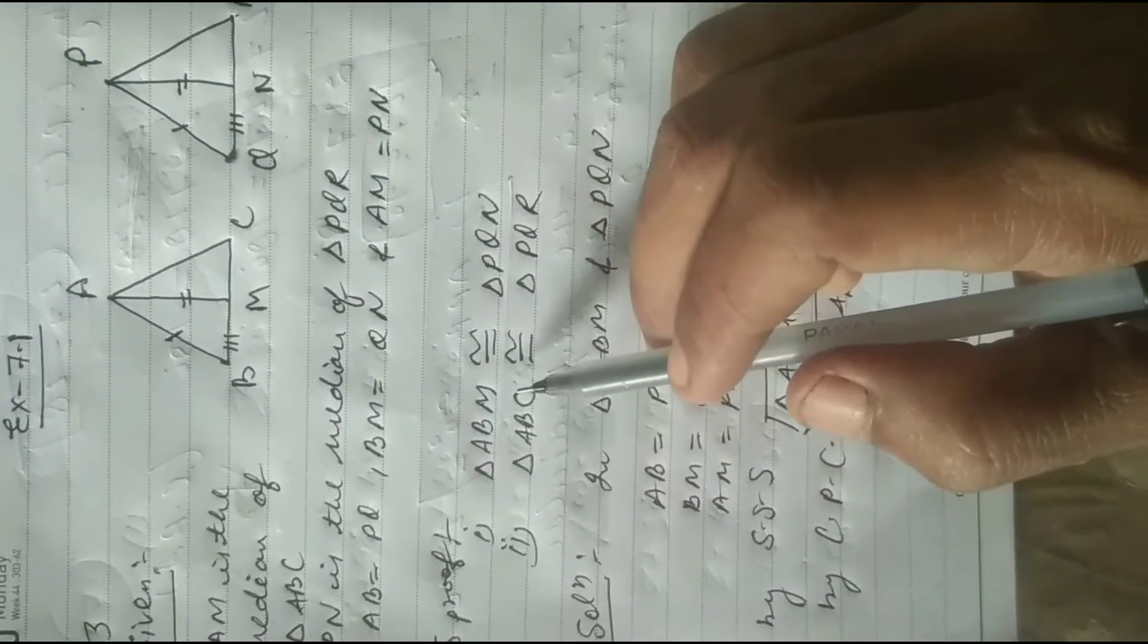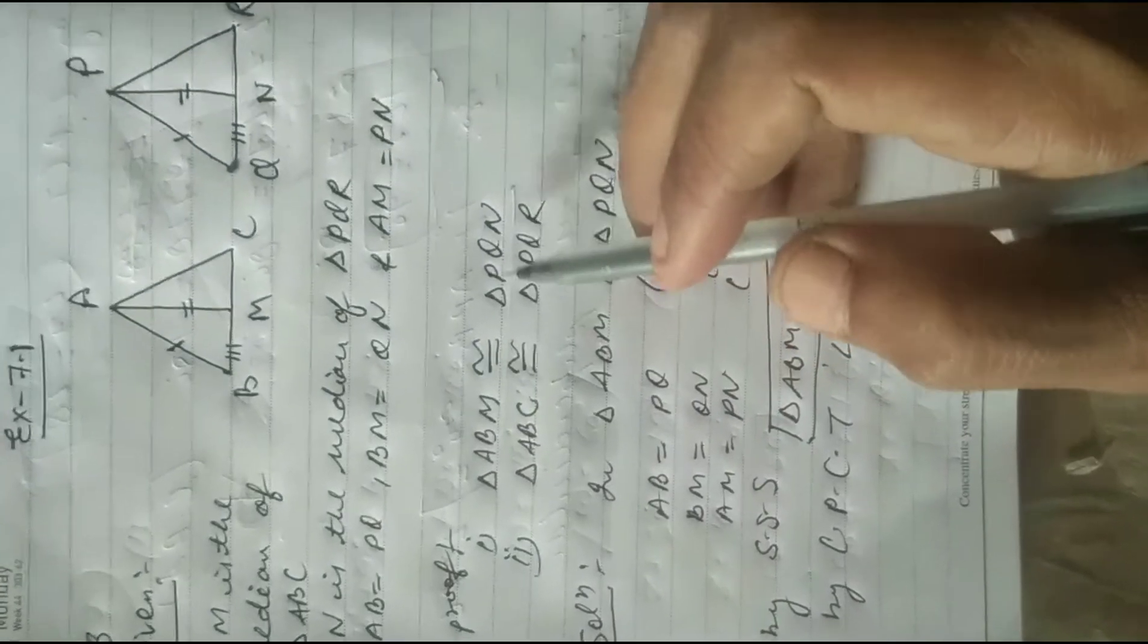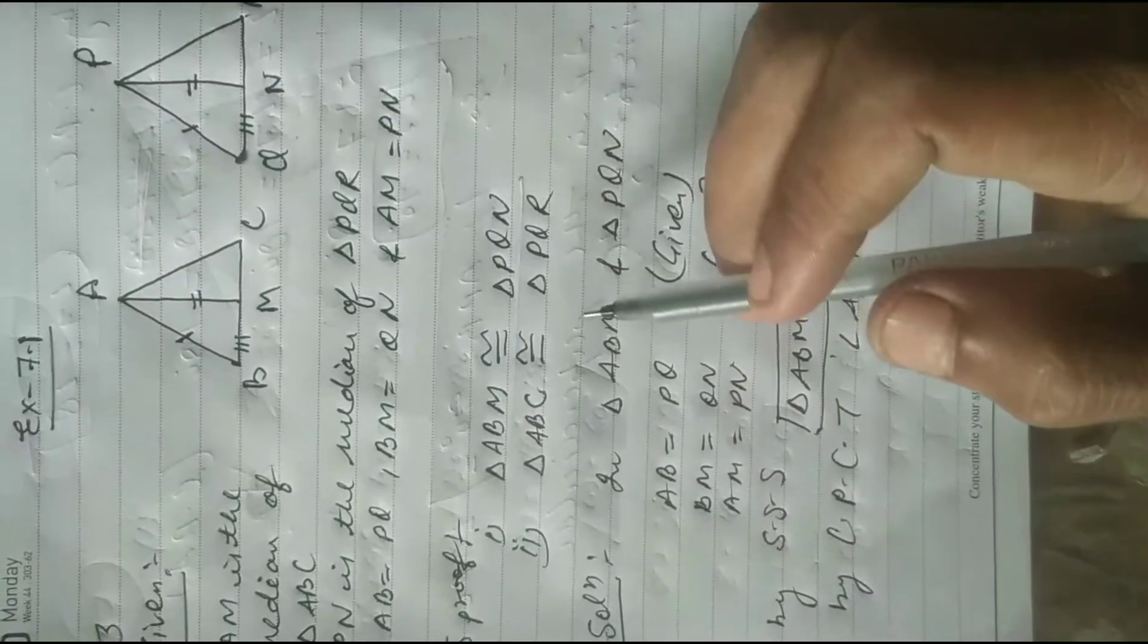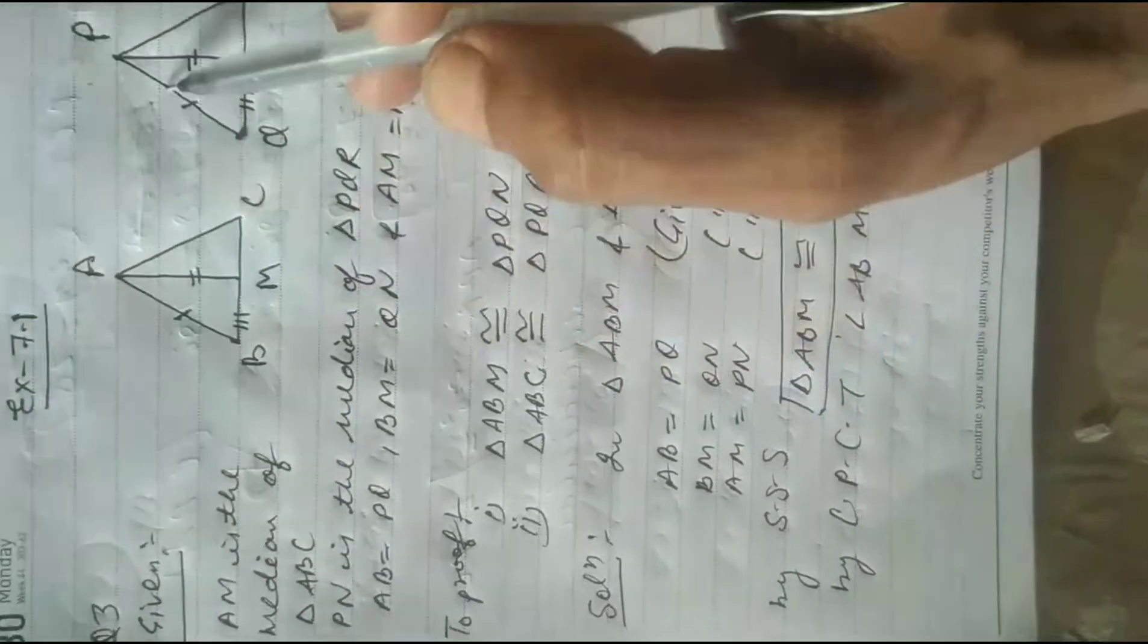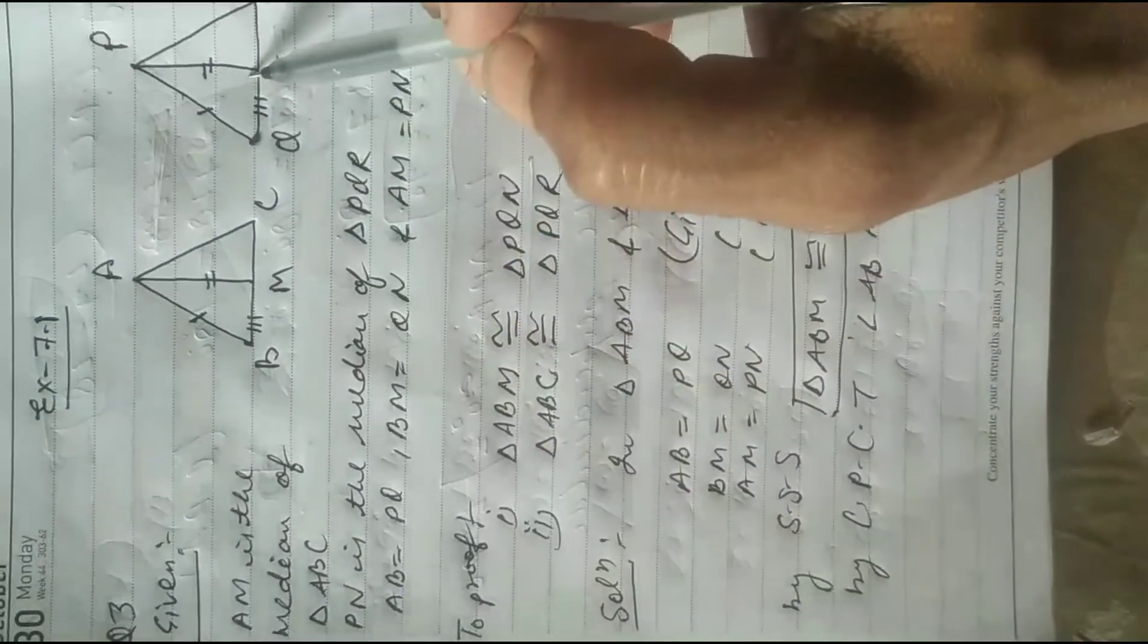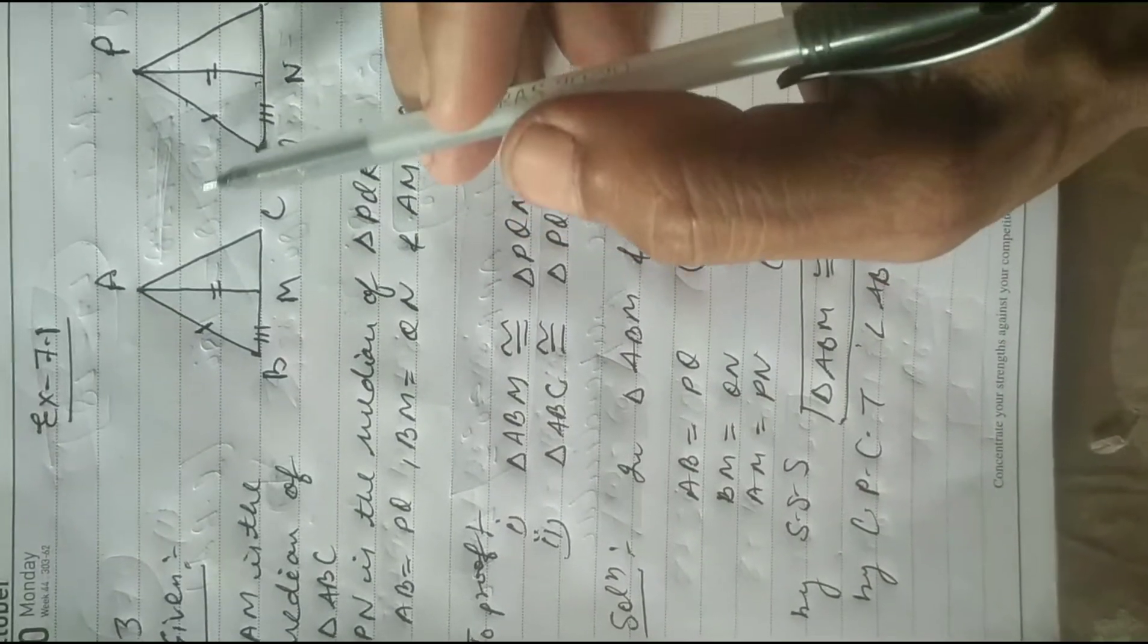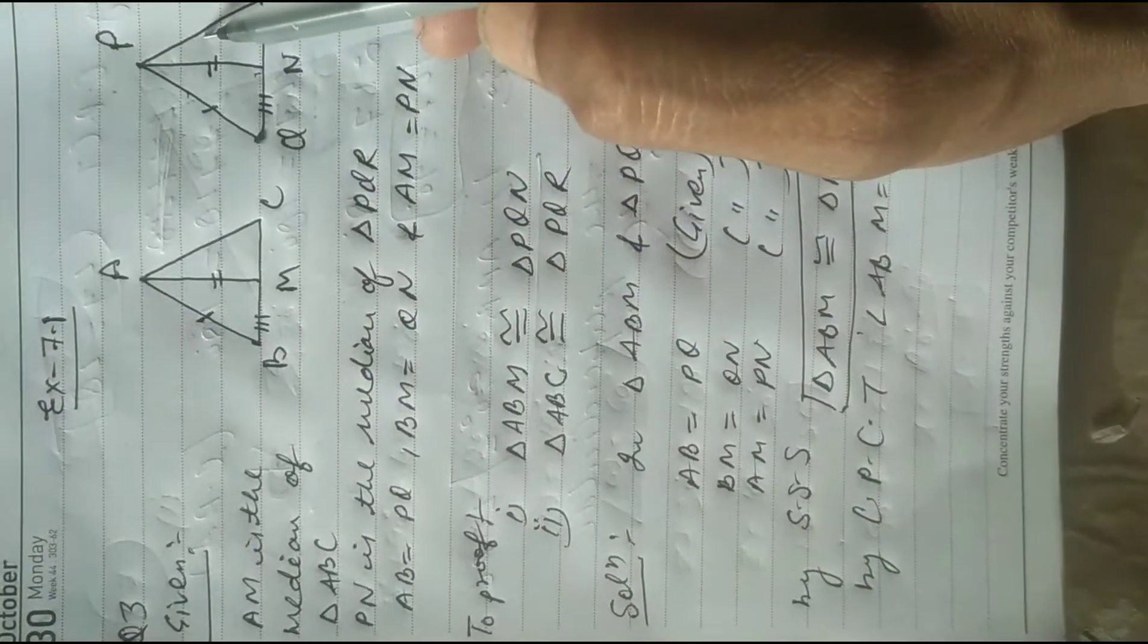Now to prove triangle AVM congruent to triangle PQN. In triangle AVM and triangle PQN, AV equal to PQ given, BM equal to QN given, and AM equal to PN.